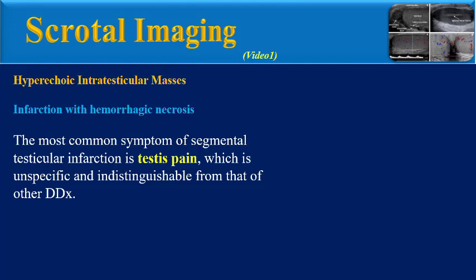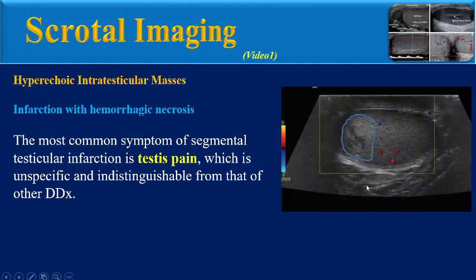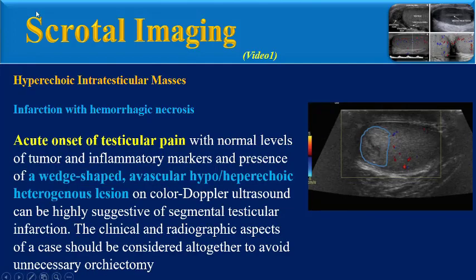The most common symptom of segmental testicular infarction is testicular pain, which is nonspecific and indistinguishable from other differential diagnoses. Acute onset of testicular pain with normal levels of tumor and inflammatory markers, and presence of a wedge-shaped avascular hypo- or hyperechoic heterogeneous lesion on color Doppler ultrasound can be highly suggestive of segmental testicular infarction. The clinical and radiographic aspects of a case should be considered altogether to avoid unnecessary orchiectomy.